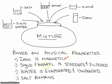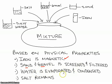Sand — it was different sizes, so it could be screened. Water is a liquid, so it would be easily evaporated, turned into a gas, and then condensed back to a liquid.